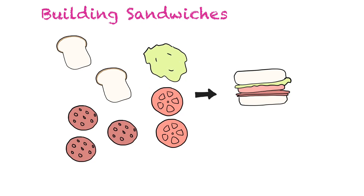To help explain the limiting reactant, I like to use an analogy — building sandwiches. Imagine we wanted to make a delicious salami sandwich, and to build one you need two pieces of bread, three pieces of salami, two tomatoes, and a piece of lettuce for every sandwich.